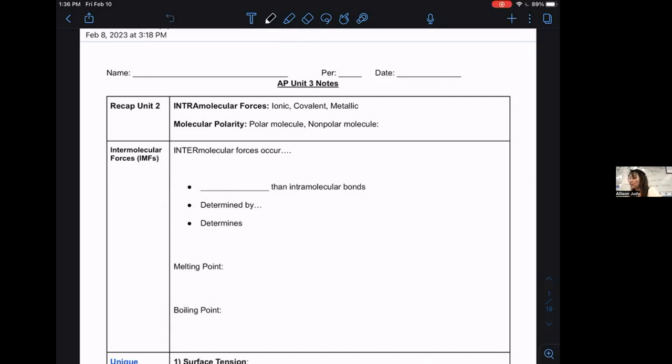Your recap of unit two, ionic covalent metallic. We call those intramolecular forces, by the way. Intramolecular forces are any type of solid bonding of some sort, like it is an actual electron share or transfer. We also ended a little bit of unit two with molecular polarity. Those two topics are going to be essential for you understanding this topic that I'm about to introduce. Intermolecular forces occur between molecules. There's no exchange or sharing of electrons.